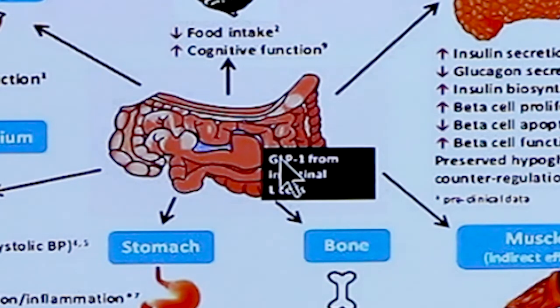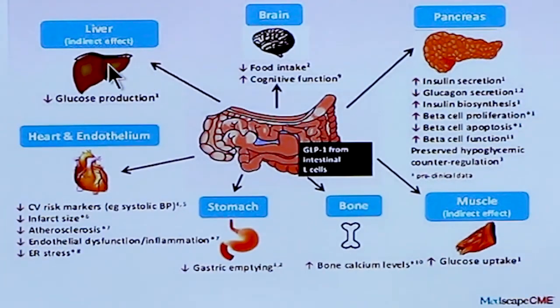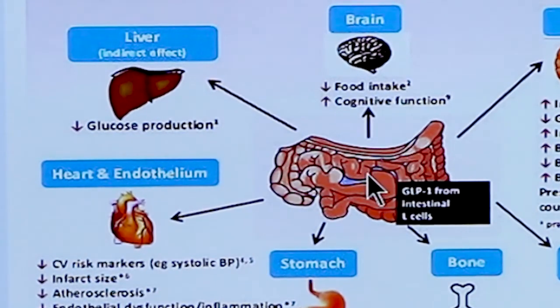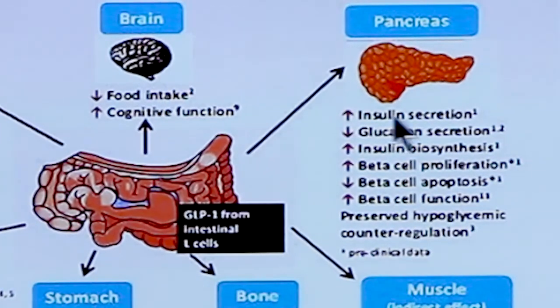GLP-1 has different functions in the body. It is important to go to the liver and decrease gluconeogenesis, sugar production. It goes to the brain and tells that person that you ate, you don't have to eat as much. It goes to the pancreas by increasing the secretion in a glucose-dependent fashion, so it does not cause hypoglycemia.